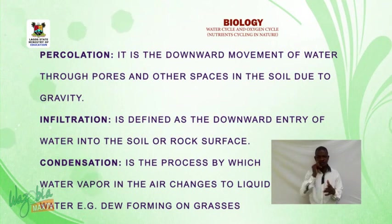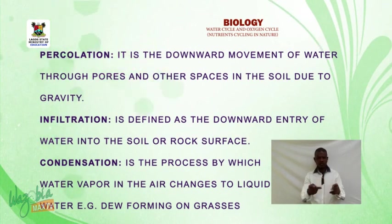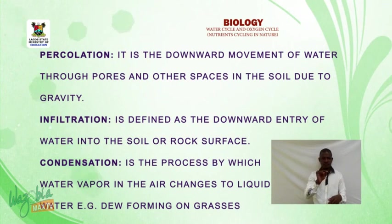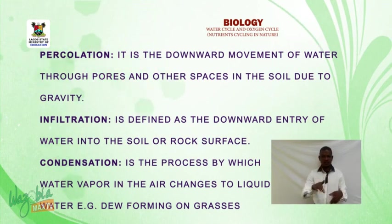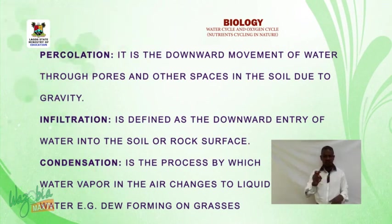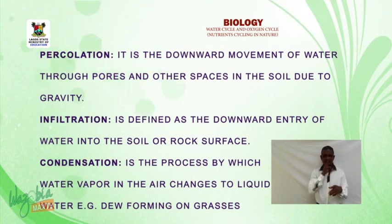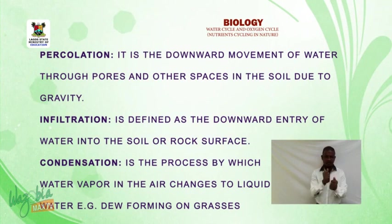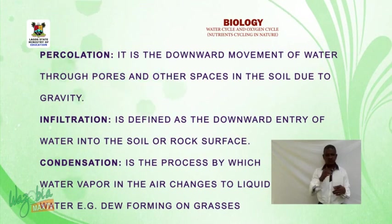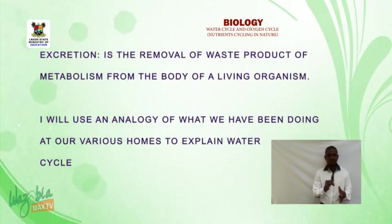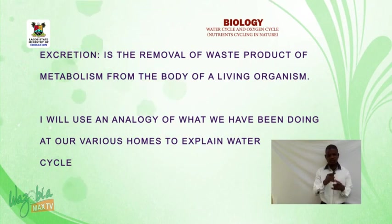Percolation is the downward movement of water through pores and other spaces in the soil due to gravity. Infiltration is defined as the downward entry of water into the soil or rock surface. Condensation is the process by which water vapor in the air changes into liquid water, for example dew forming on grasses. Excretion is the removal of waste products of metabolism from the body of a living organism.